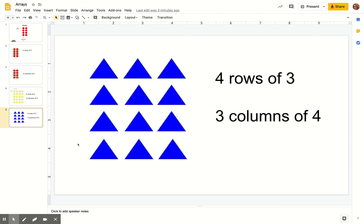And then columns, we have one, two, three columns. And in each column we have one, two, three, four. So we have three columns of four.